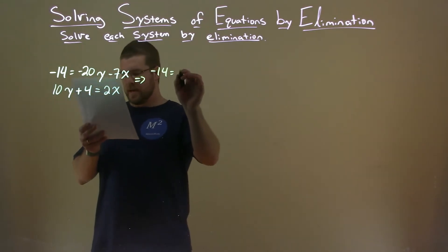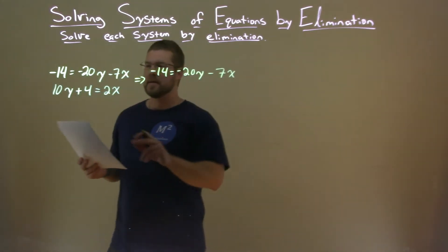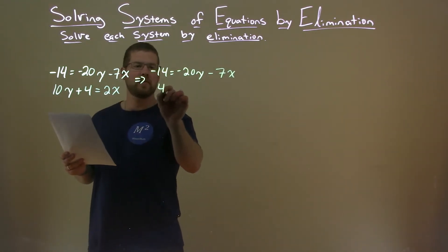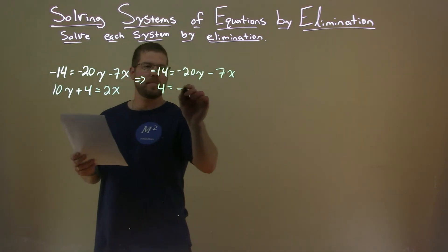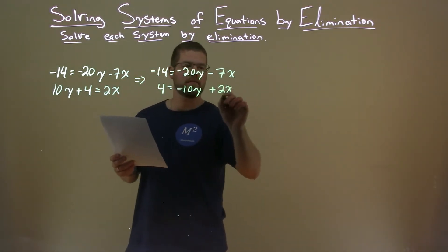Minus 14 equals minus 20y minus 7x. Here, let's subtract the 10y to both sides, so we're left with 4 left over. Subtract the 10y right there, and then just a 2x left over.